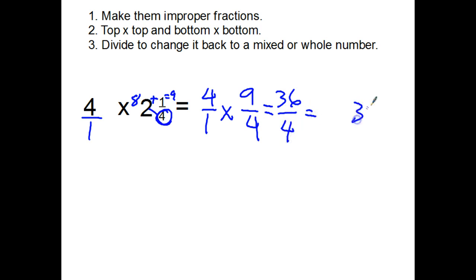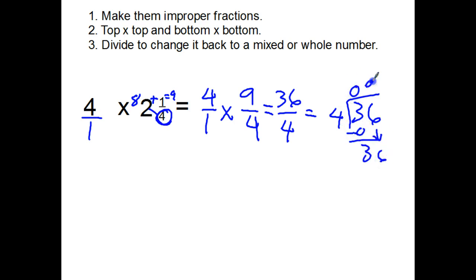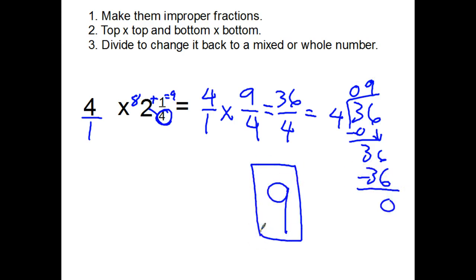Let's divide. Thirty-six divided by four — no fours in three, how many fours in thirty-six? Nine. This one comes out exactly even, so my answer is just nine. There's no fraction part. Check the whole number: four times two is eight, which is really close to nine. That makes sense.